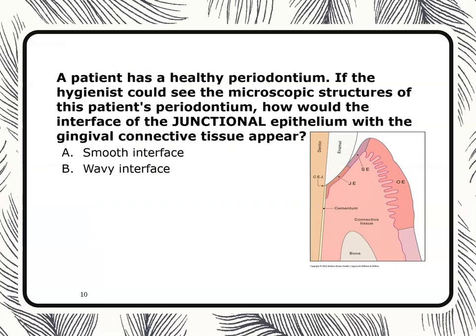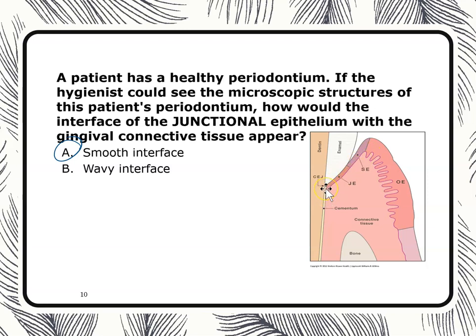Here's a question: a patient has a healthy periodontium. If the hygienist could see the microscopic structures, how would the interface of the junctional epithelium with the gingival connective tissue appear — smooth or wavy? In a healthy mouth, the junctional epithelium is smooth. If you had an unhealthy mouth with gingivitis or perio, you would see a wavy interface.